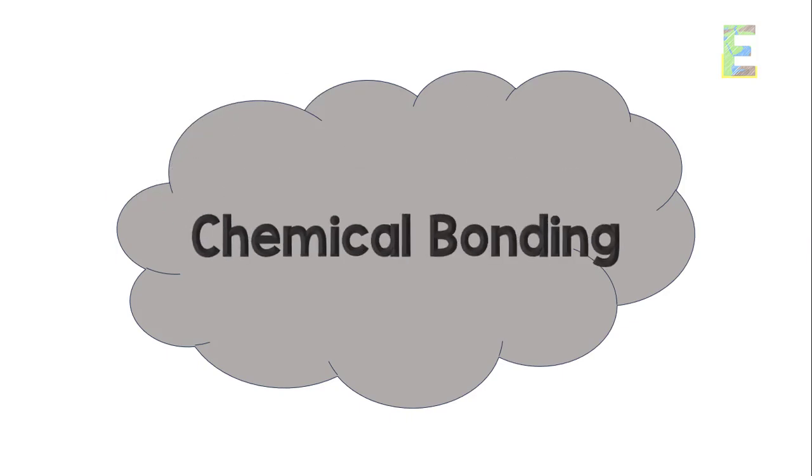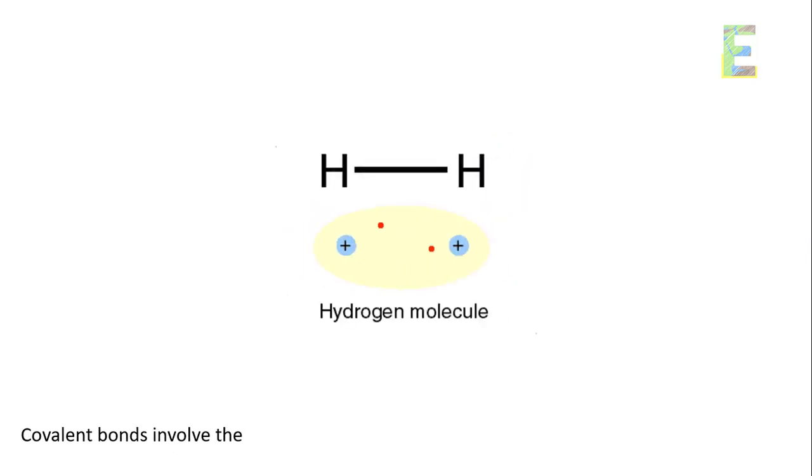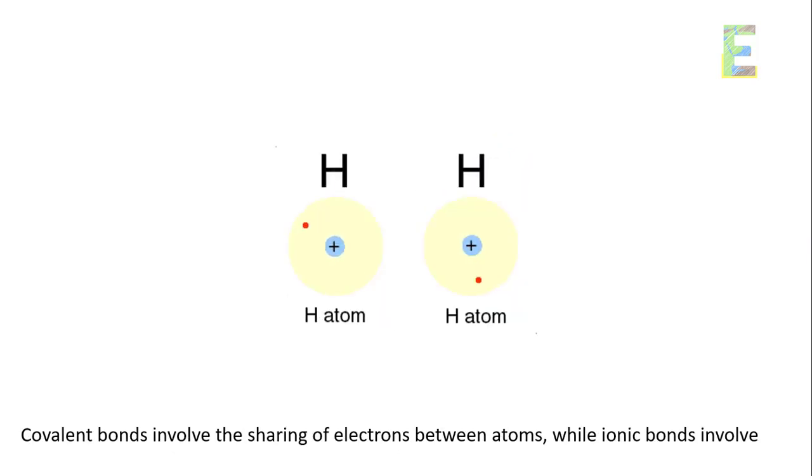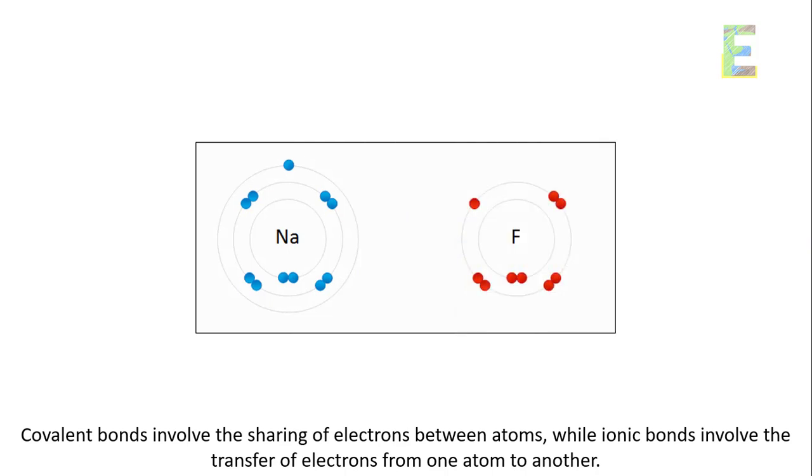Chemical bonding. Chemical bonding is the force that holds atoms together in compounds. Covalent bonds involve the sharing of electrons between atoms, while ionic bonds involve the transfer of electrons from one atom to another.